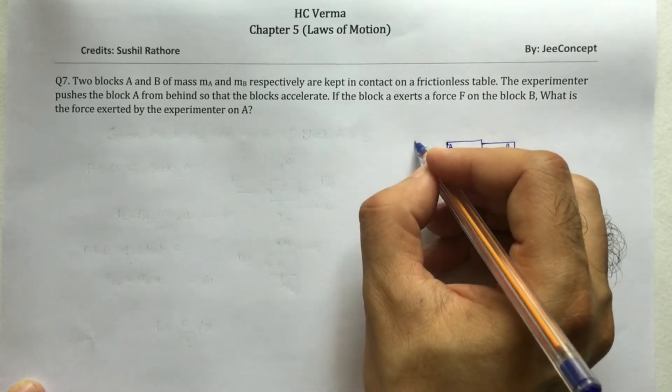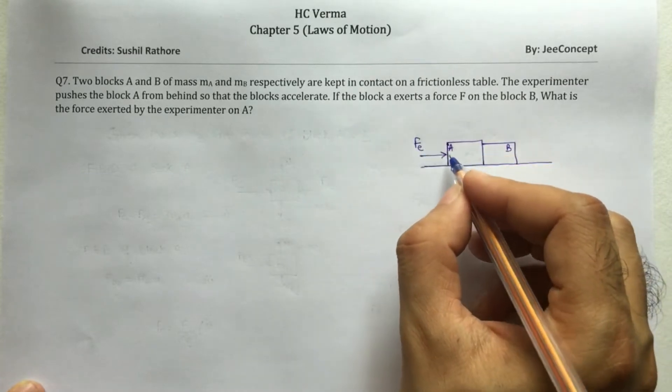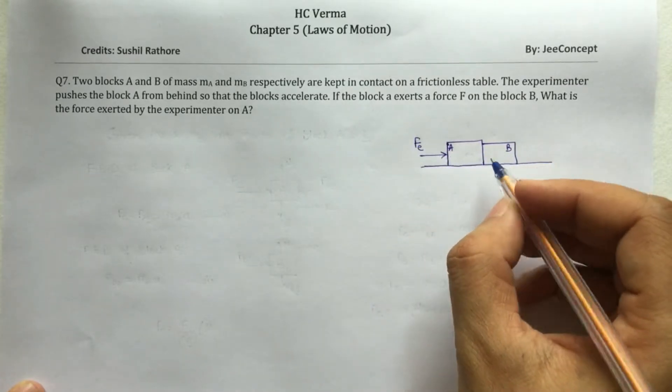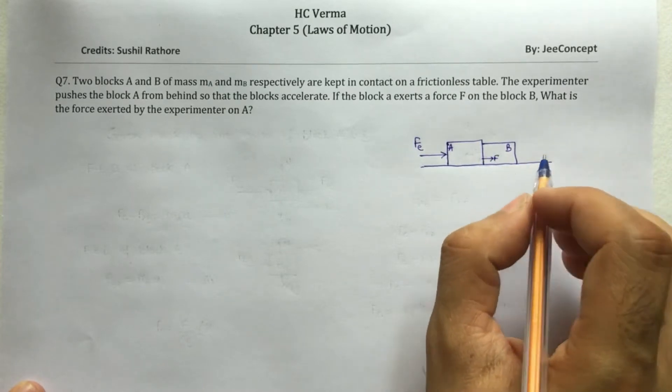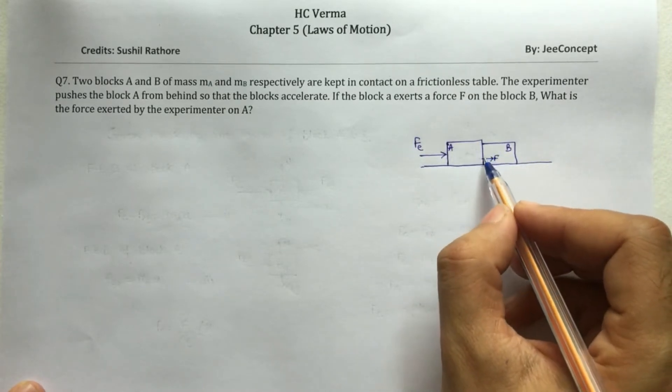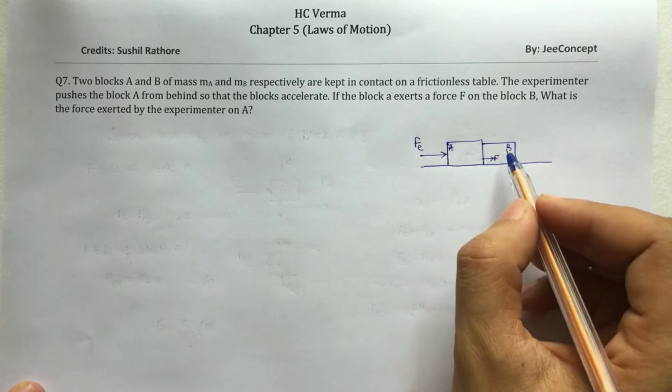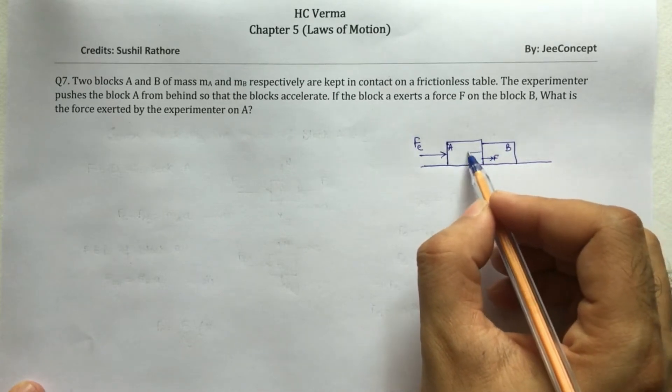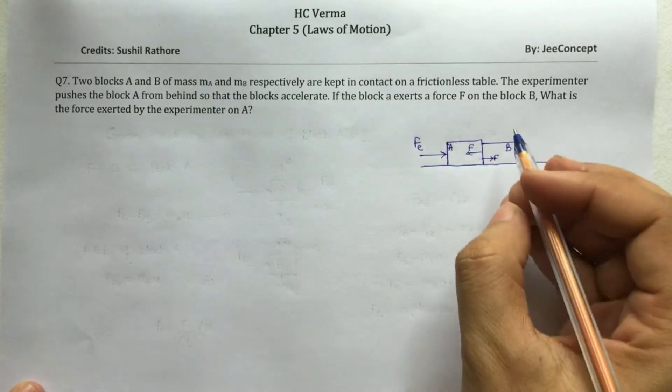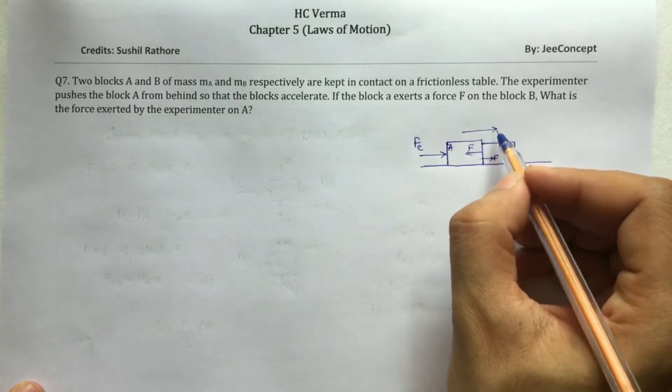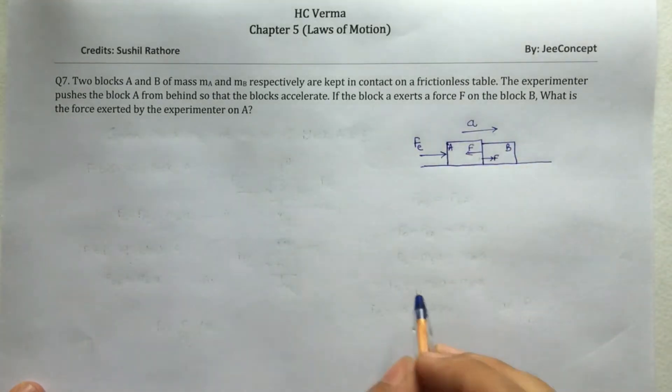The experimenter is pushing the block A with the force Fe and block A exerts a force F on B. So if block A is exerting a force F on B, so the same amount of force is exerted by B on A. So that is going to be F. And both blocks are moving with acceleration A.